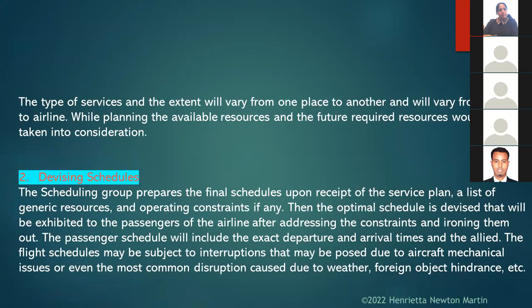The type of services and extent will vary from airline to airline. While planning, available resources and future required resources are taken into consideration. The scheduling group prepares final schedules upon receipt of the service plan, a list of generic resources, and operating constraints. The optimal schedule is then devised, addressing and ironing out any constraints or impediments.